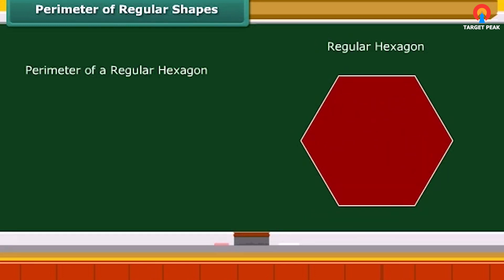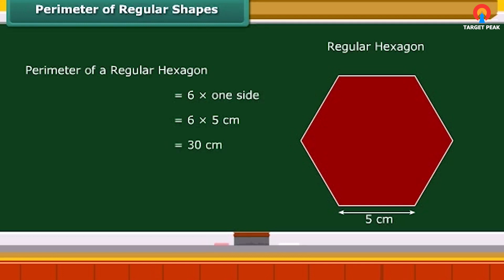The perimeter of a regular hexagon is 6 multiplied by its side. For example, if a regular hexagon has a side of 5 centimeters, then its perimeter is 6 × 5 = 30 centimeters.